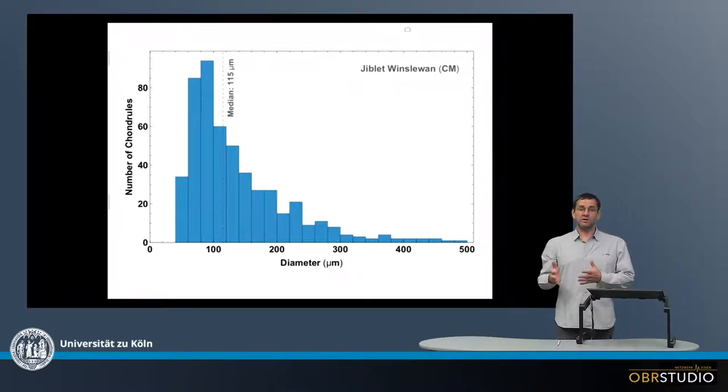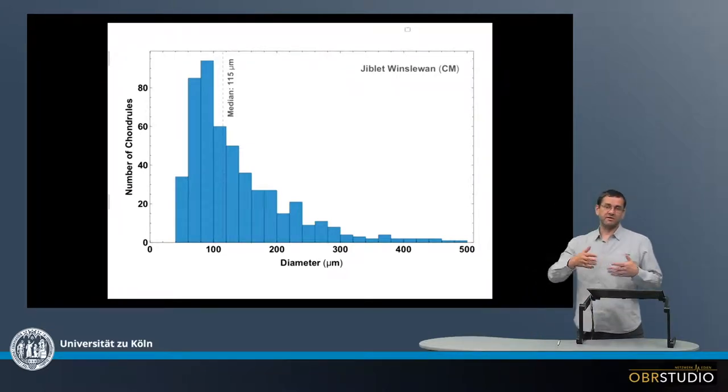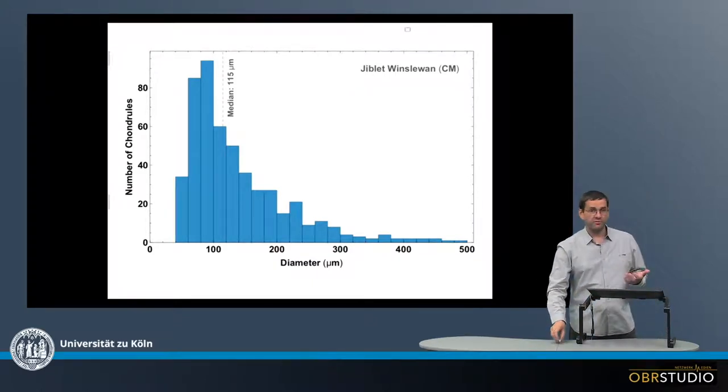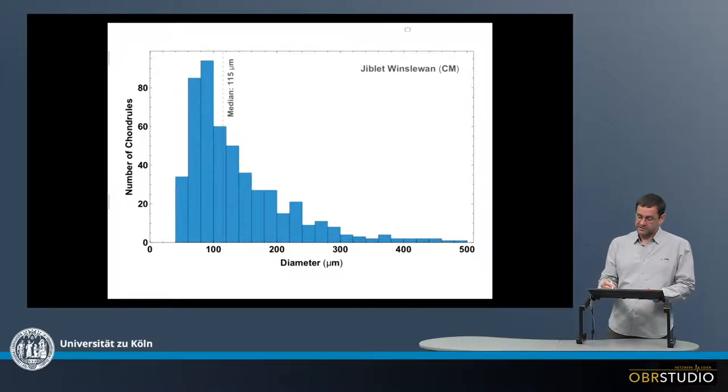Chondrules in a chondrite do not all have the same size, but have various sizes. This is shown here in this plot for one meteorite, as an example, which is Triplet-Winzel 1, a CM chondrite.